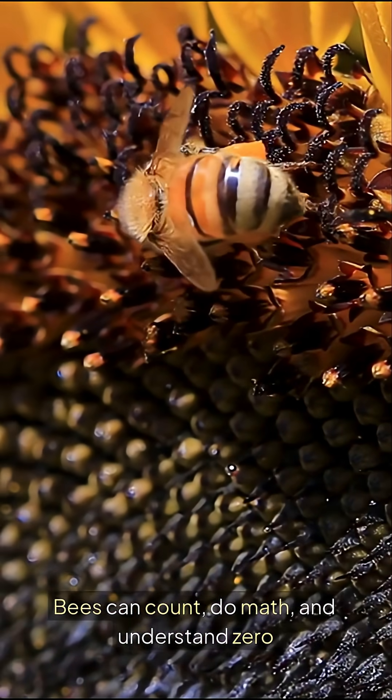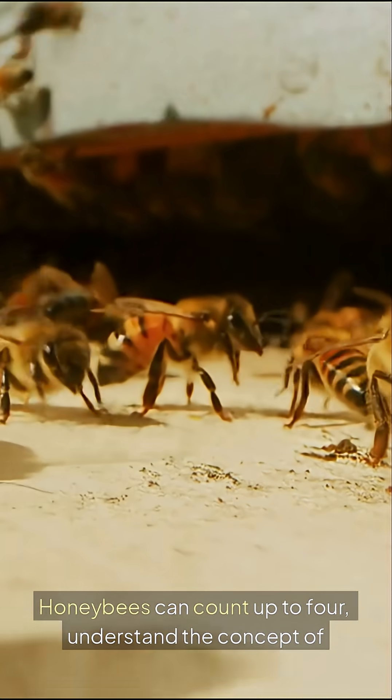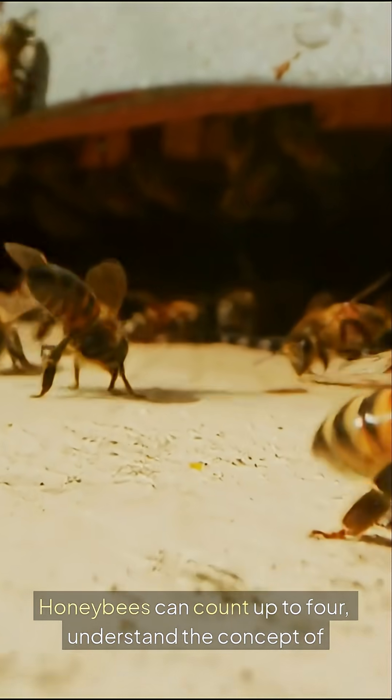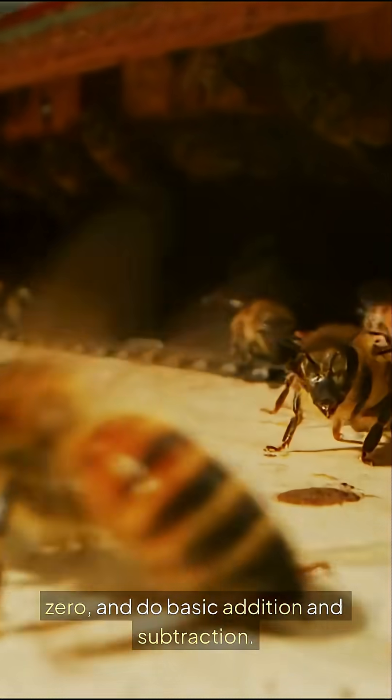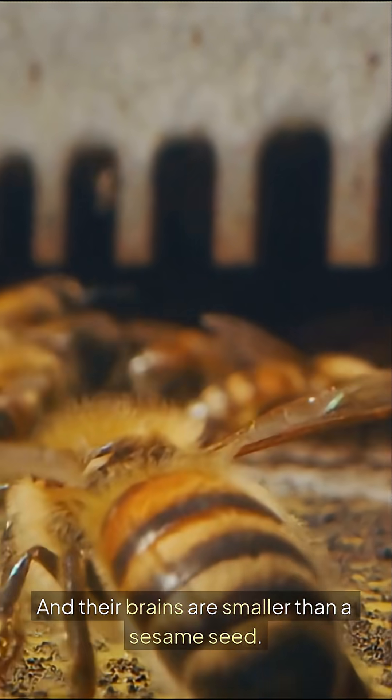Bees can count, do math, and understand zero. Honeybees can count up to four, understand the concept of zero, and do basic addition and subtraction. And their brains are smaller than a sesame seed.